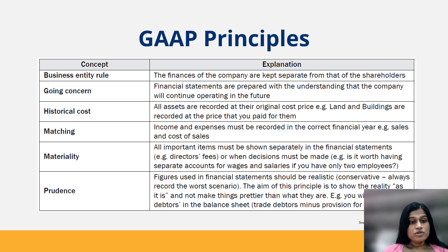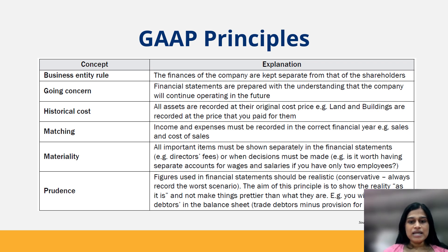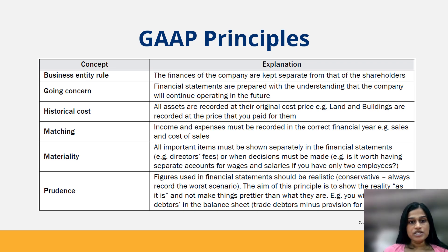There is also a separation of the shareholders' finances from those of the company. The company's finances — their income, expenses, assets, equity, and liabilities — are completely separate from shareholders. Going Concern states that financial statements need to be prepared with the understanding that the company will continue to operate in the future. We do not assume the company is being liquidated or going into bankruptcy, but rather that they will continue to operate for the foreseeable future.